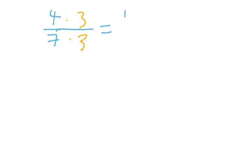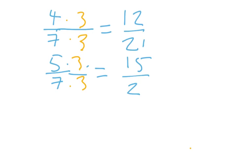that would give me twelve twenty-firsts. Five-sevenths multiply top and bottom, numerator and denominator by three, would give me fifteen twenty-firsts. Looking for a rational number between those, I could choose fourteen over twenty-one, maybe.